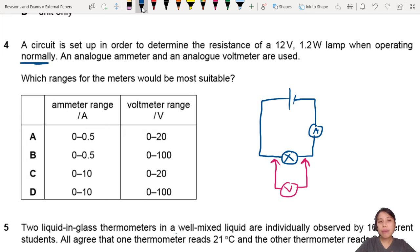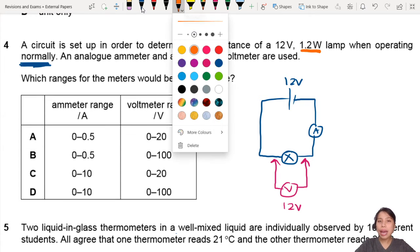If you want the lamp to operate normally, you need to give it its normal rating of 12 volts, which means this will be 12 volts. Secondly, the 1.2 watt refers to the lamp's power rating.